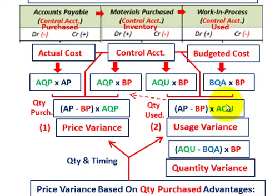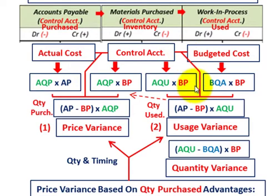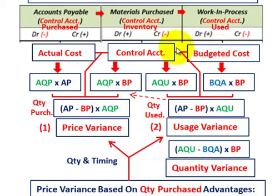When talking about actual usage, that's only the amount we used in production — we may have received and purchased a much greater amount. So the usage variance is calculated based only on the quantity actually used, while it sits in inventory until that time. The quantity variance is the difference between actual quantity used and budgeted quantity allowed times the budgeted price — that's the quantity variance.